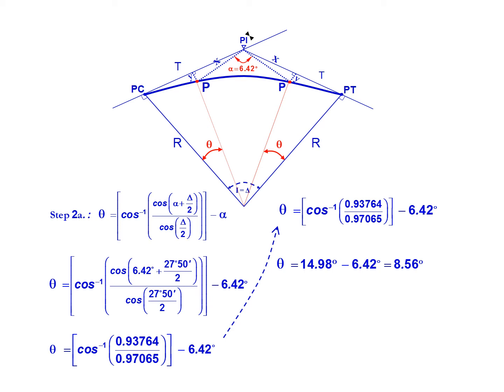We subtract 6.42 degrees from this. Further simplifying, theta equals 14.98 degrees minus 6.42 degrees, giving us a final theta of 8.56 degrees.